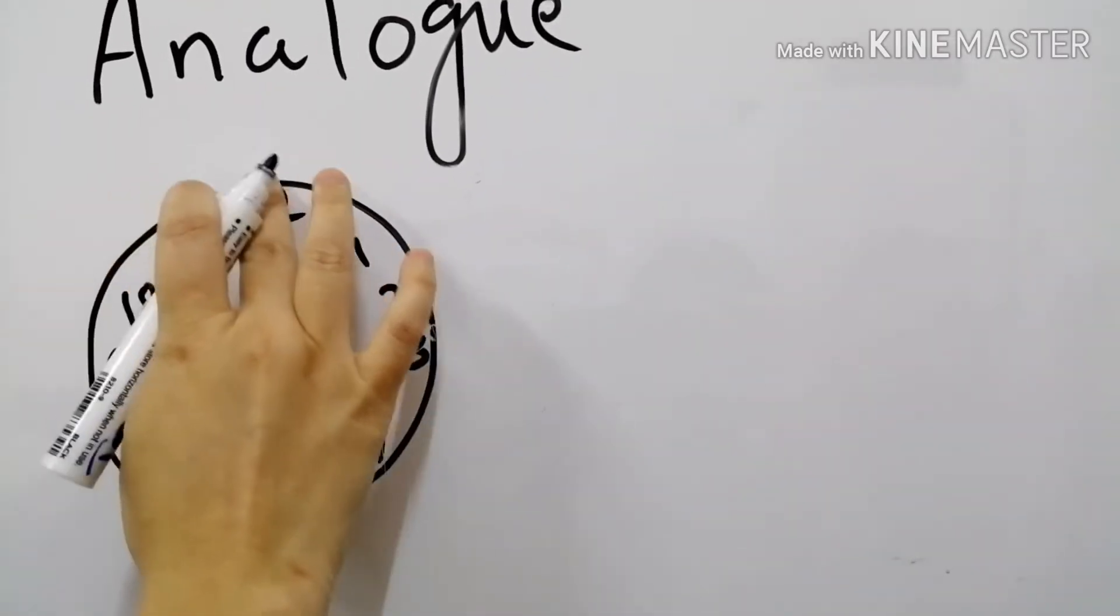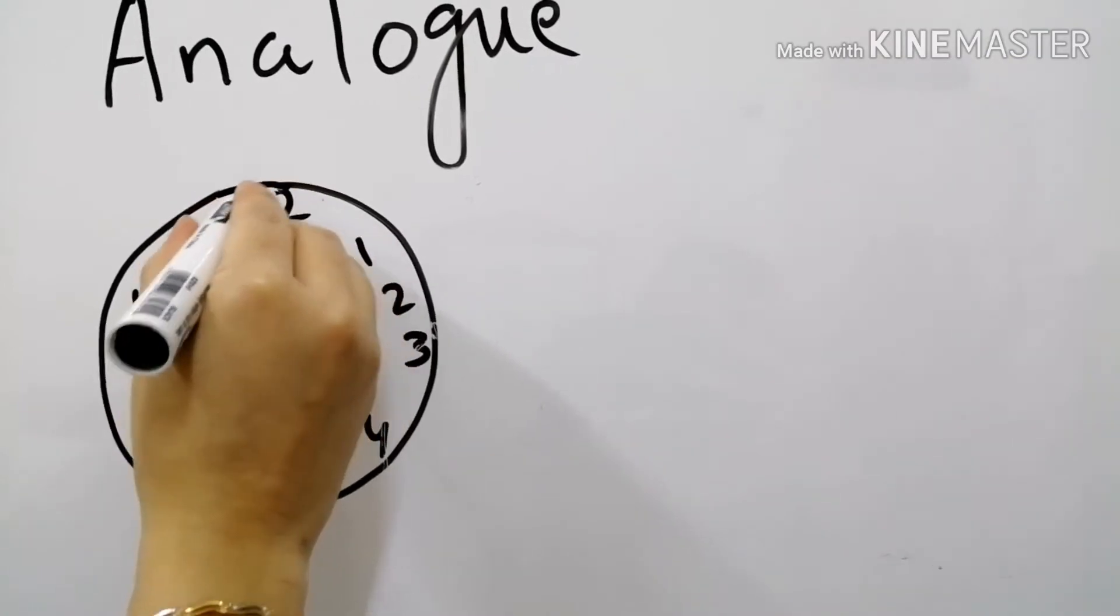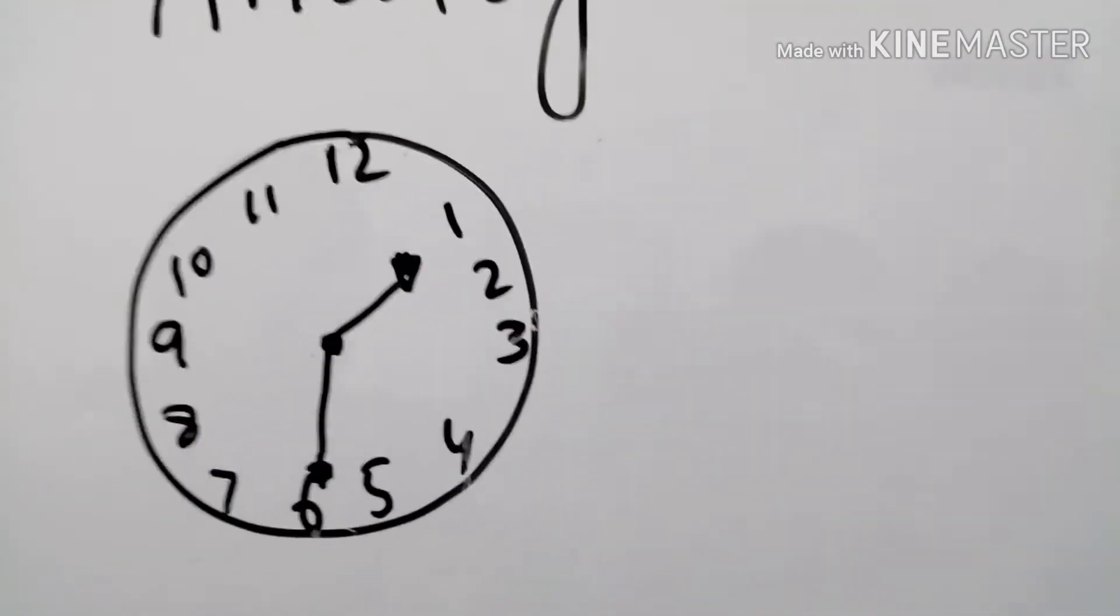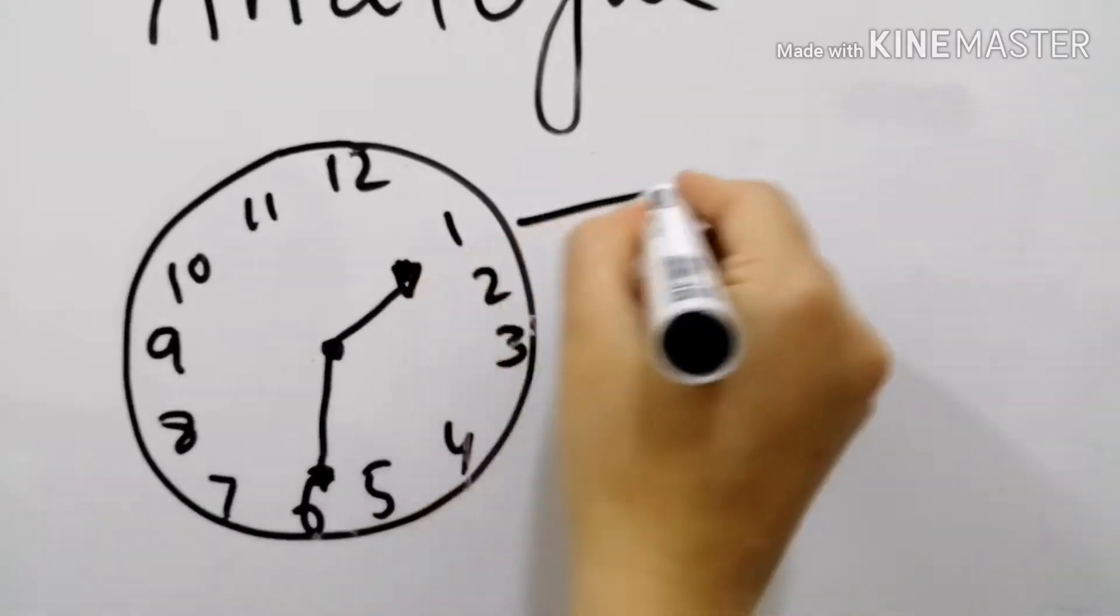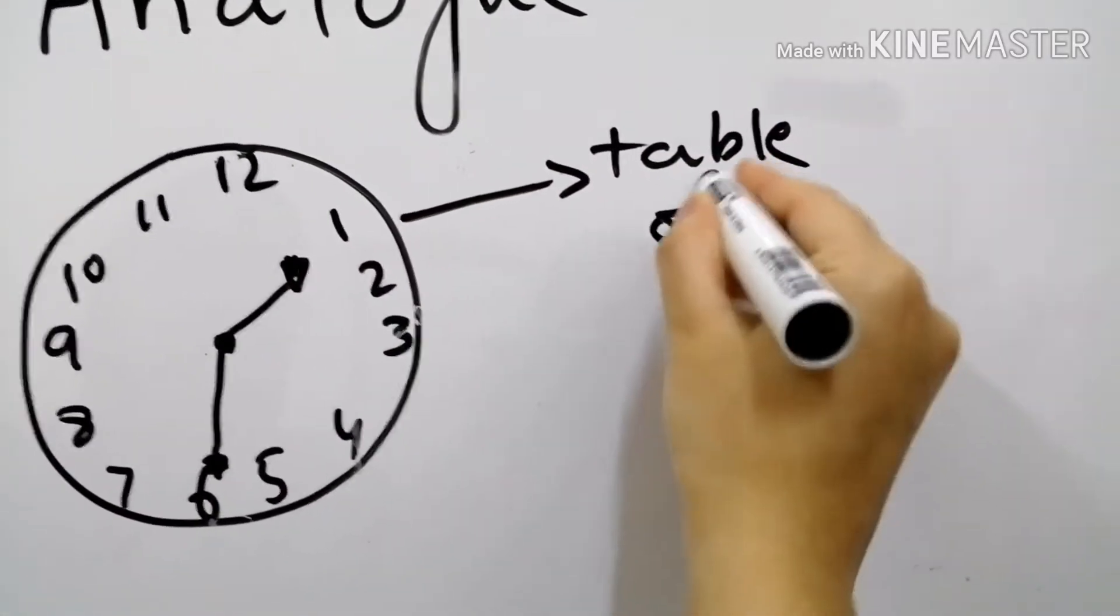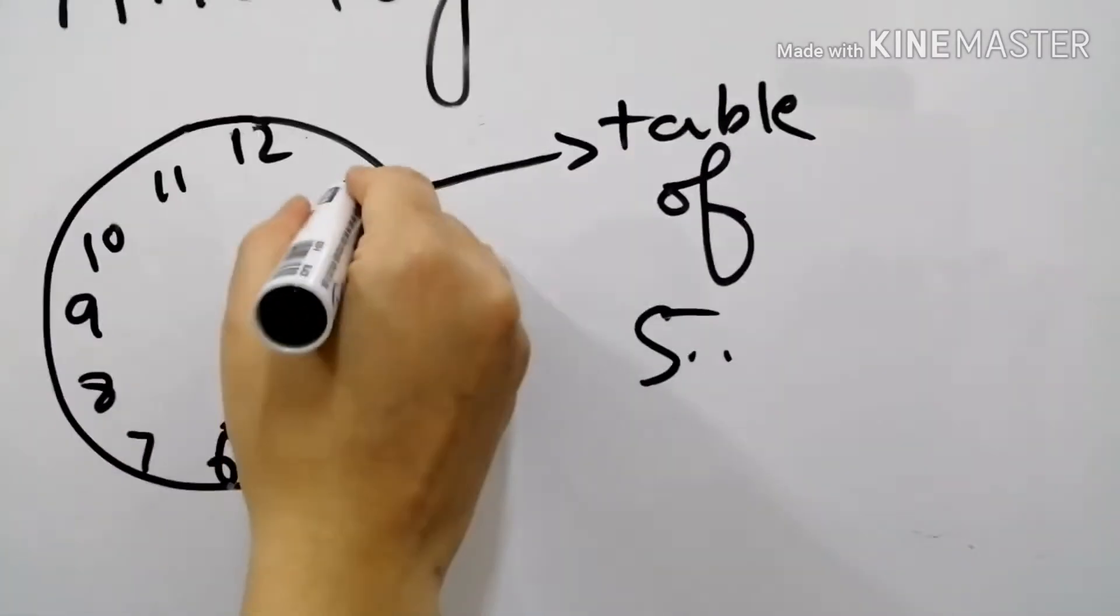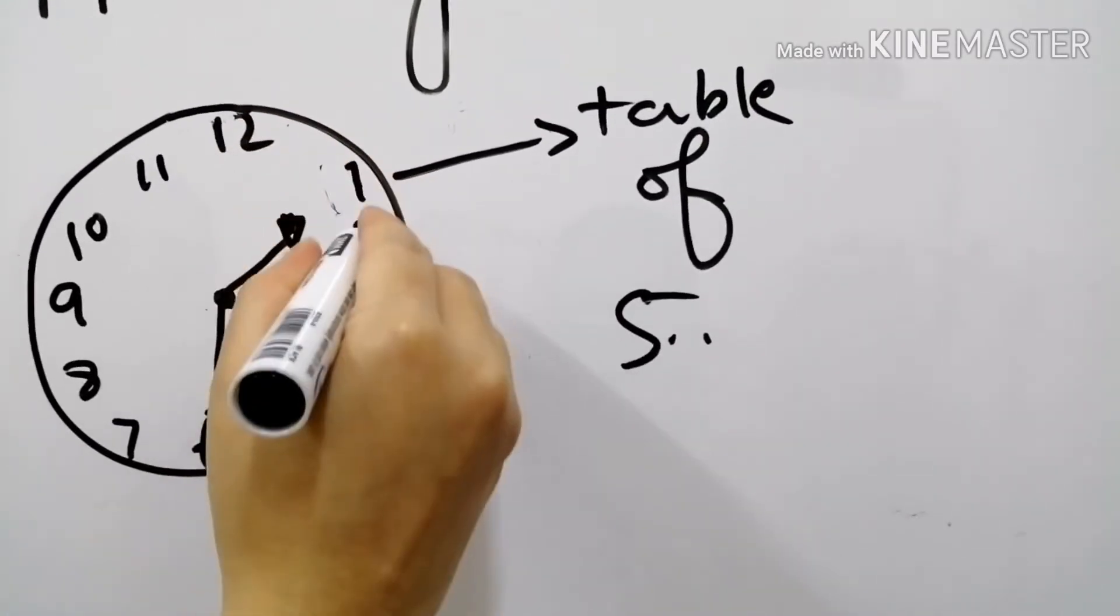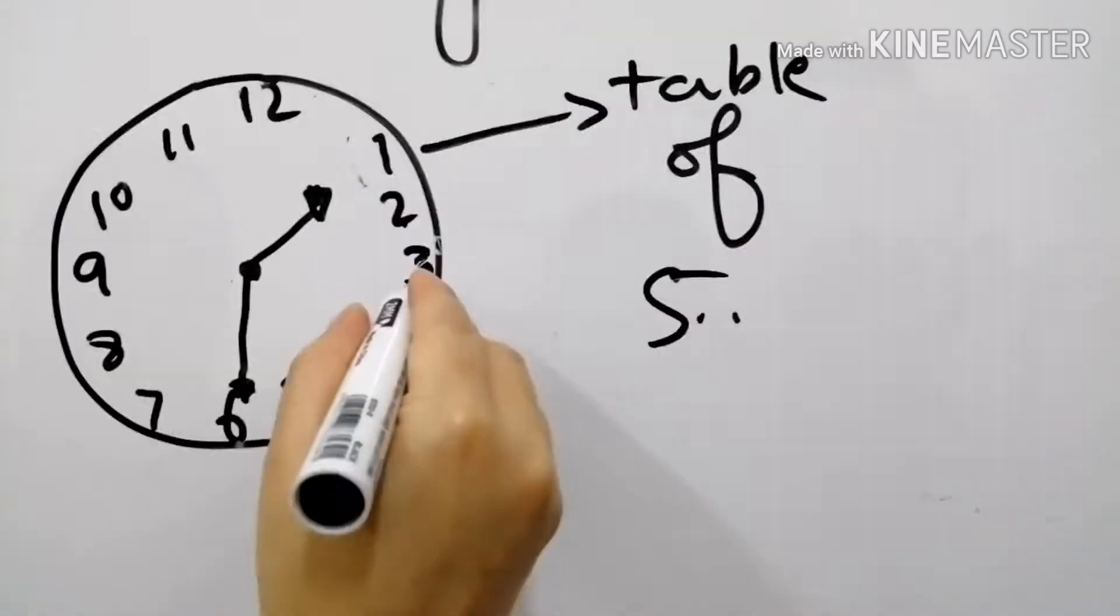Keep it in your mind that when we see the clock we read the table of 5. Table of 5. How? This is 5. 1 times 5. 2 times 10. 3 times 15.